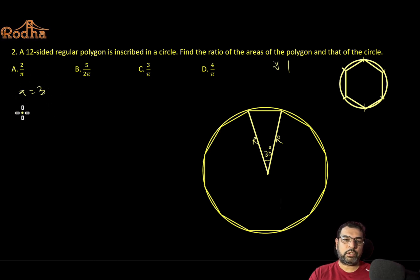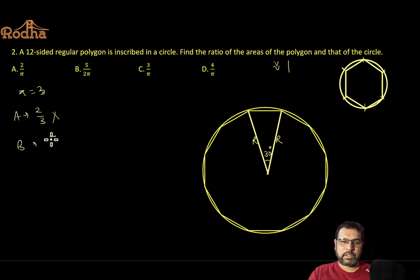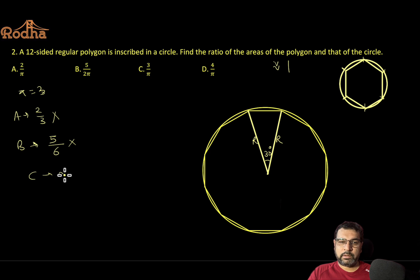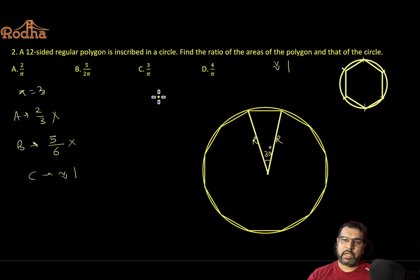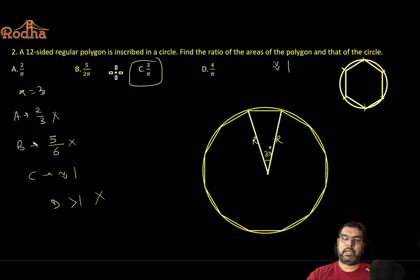With π = 3: Option A gives 2/3 ≈ 0.6 — far from 1, eliminated. Option B gives 5/25 or 5/6 — still not close enough. Option C gives approximately 1 when you use π = 3.14, and since the polygon area must be slightly less than the circle area, it's less than 1. Option D is greater than 1, which is impossible since the polygon is inside the circle. So option C is the answer — these are the actual CAT options.